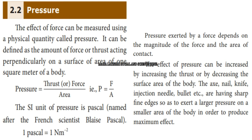Nail, knife, injection needle, bullet, etc. are having sharp fine edges so as to exert larger pressure on a smaller area of the body in order to produce maximum effect. Maximum pressure is achieved in a small area, which is why these objects are very sharp.